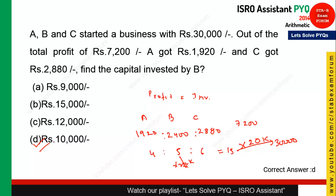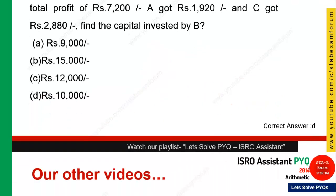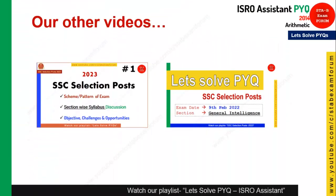To confirm: 15 parts = ₹30,000, so the factor is 2,000. B's ratio is 5, so 5 × 2,000 = ₹10,000 is the answer.